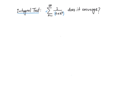Let's define a function corresponding to the series. Let f of x equal 2 over x plus x squared. We're going to define this function on the domain from 1 to infinity, because the series goes from 1 to infinity. The nth term, a sub n, is 2 over n plus n squared, which is nothing but f of n.